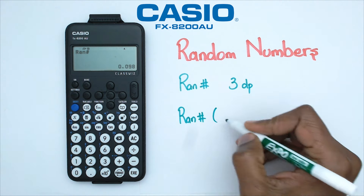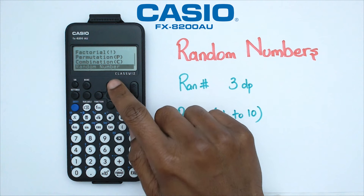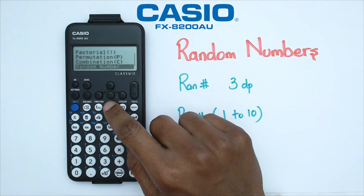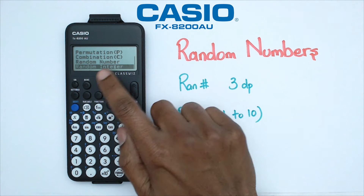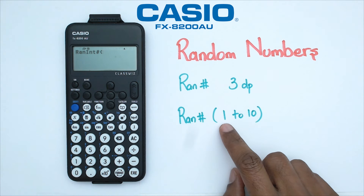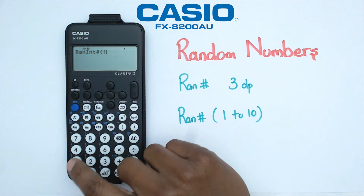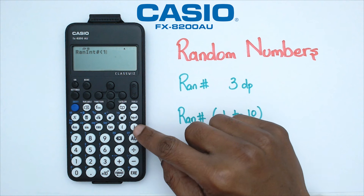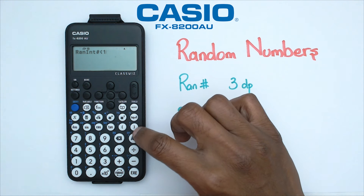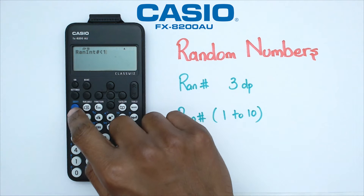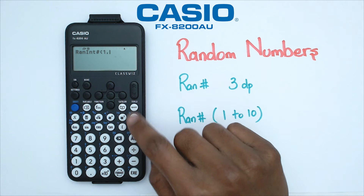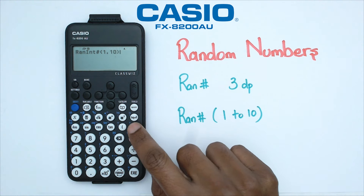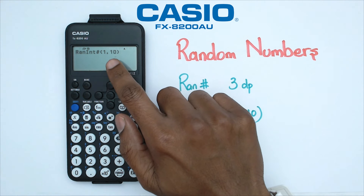But what if I want a random number between 1 to 10? Go into catalog, go down to probability, press EXE, and keep going down until we see random number. One more after that is random integer — click on that. We want a number between 1 to 10, so type 1, then a comma. To get a comma, it's the shift of the right bracket — press shift and the right bracket.